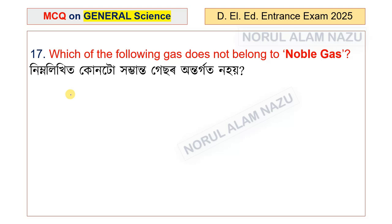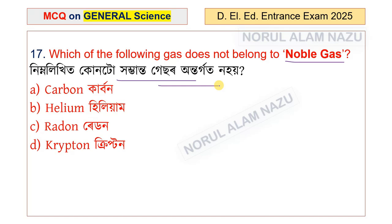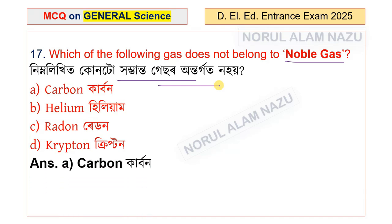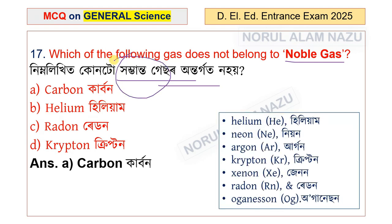Question number 17: Which of the following gases does not belong to the noble gases? The options are carbon, helium, radon, and krypton. The answer is carbon — carbon does not belong to the noble gases. The noble gases are helium, neon, argon, krypton, xenon, and radon.